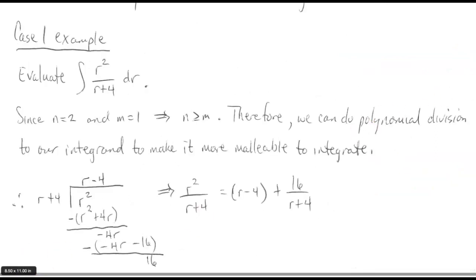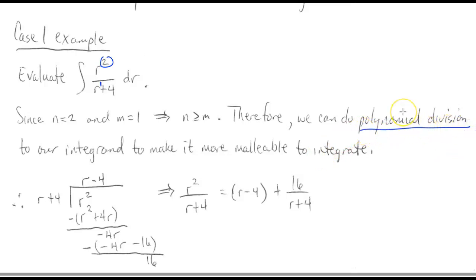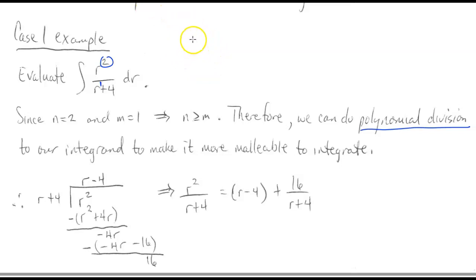Our first example is a case one example where we have a rational function where the degree of the numerator is larger than the degree of the denominator — we know that because r in (r+4) has an understood exponent of one. Whenever we have this situation, we just do polynomial long division, because it lets us break this down into some expression plus another expression divided by (r+4), where the remainder is of lower degree.